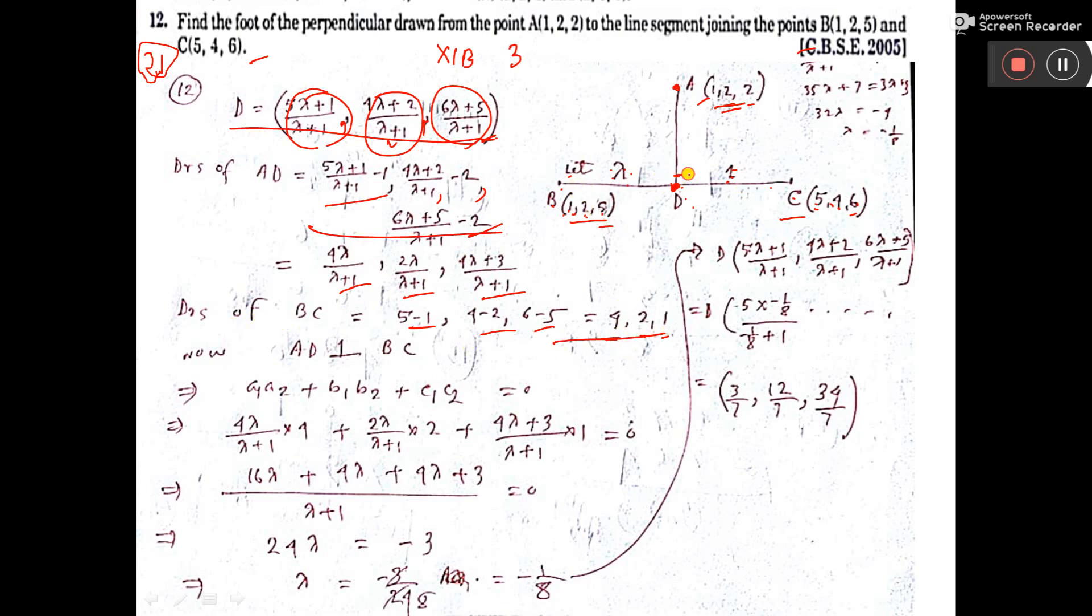Now these two lines are perpendicular. Now condition of perpendicularity we know that a1a2 plus b1b2 plus c1c2 equal to 0. Then put the value of a1 and a2, b1 and b2, c1 and c2 equal to 0. So from there you calculate and get the value of lambda.